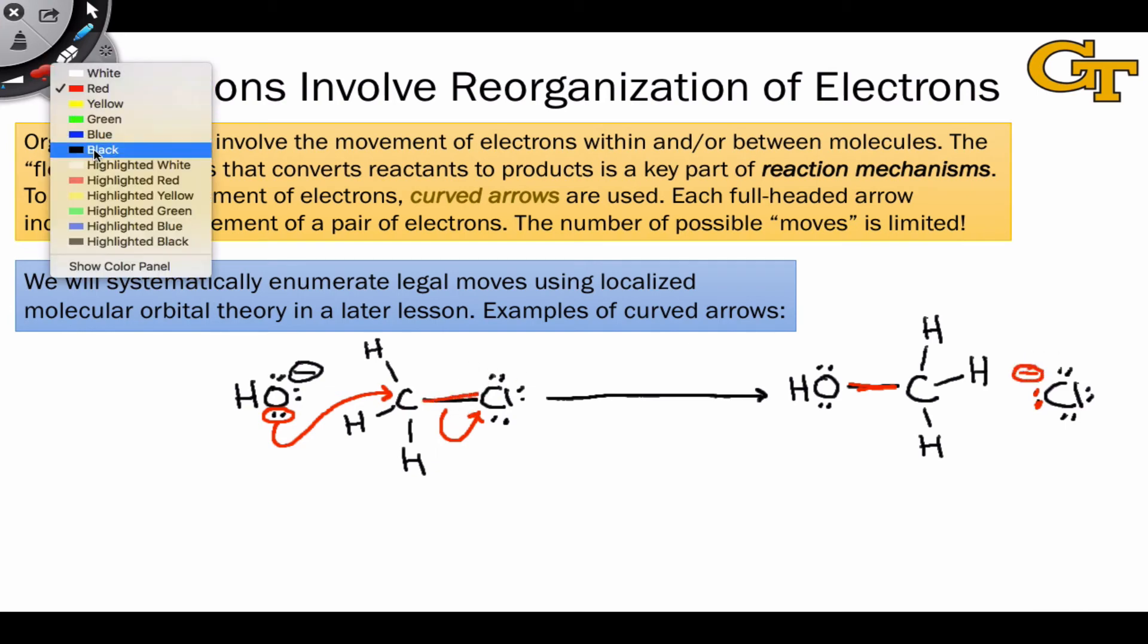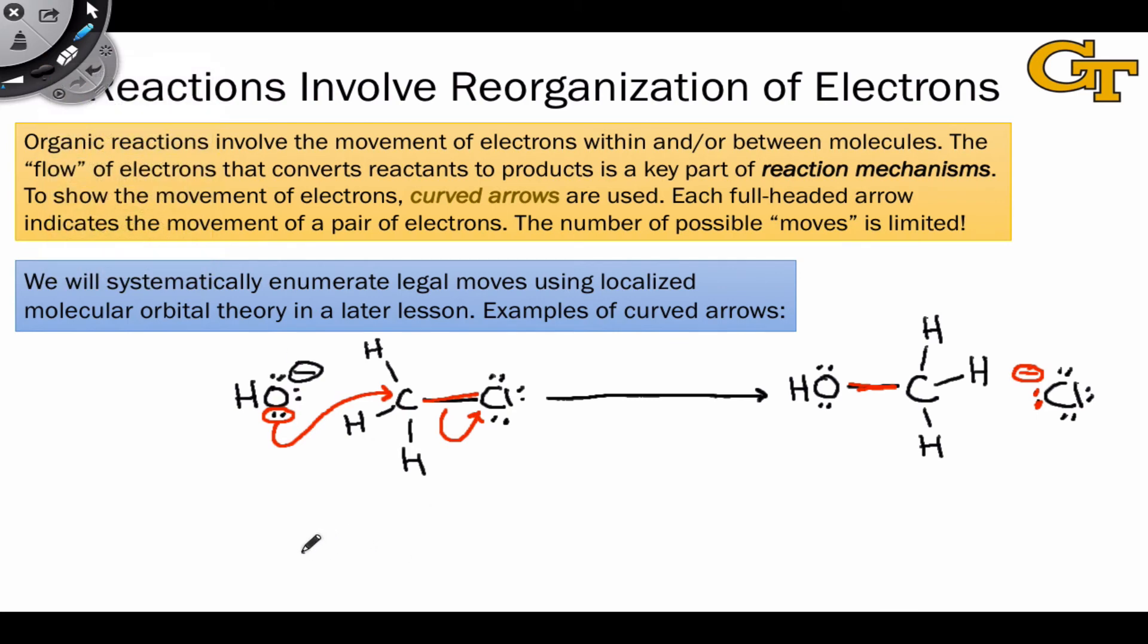The two electrons in the new lone pair on the now chloride anion came from this bond here. Curved arrows can also be used to show the interconversion of resonance structures, and we'll have a lot more to say about resonance structures in a later video, but for the time being,